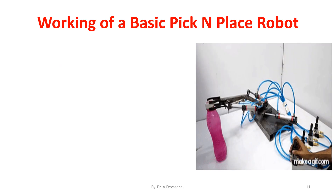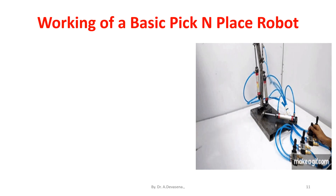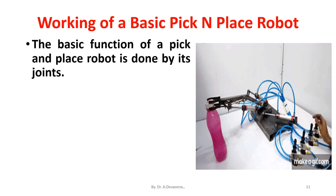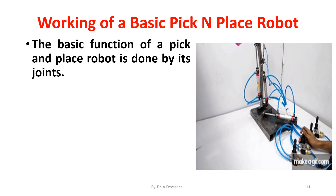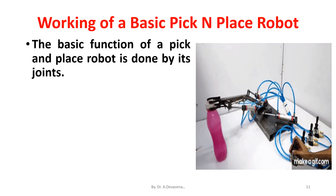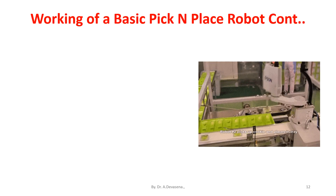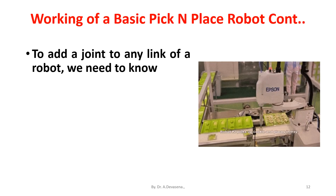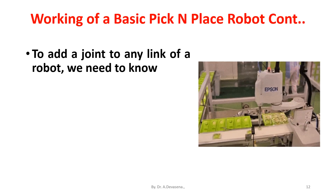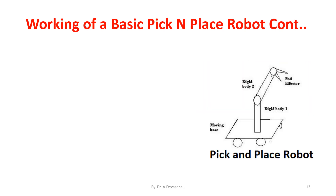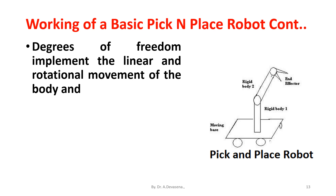Let us discuss the working of a basic pick and place robot. The basic function of a pick and place robot is done by its joints. Joints are analogous to human joints and they are used to join two consecutive rigid bodies in the robot. To add a joint to any link of a robot, we need to know about the degrees of freedom and the degrees of movement for that body part. Degrees of freedom implement the linear and rotational movement of the body, and degrees of movement imply the number of axes the body can move.